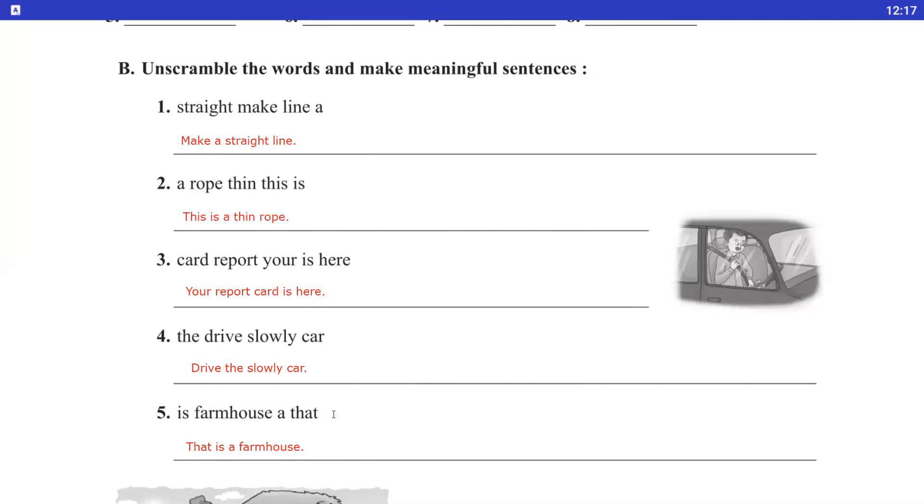So now I am going to repeat it. First is make a straight line. This is a thin rope. I have written a capital letter, make M, then this T capital, full stop. Your report card is here. Full stop. Drive the car slowly. Full stop. That is a farmhouse.